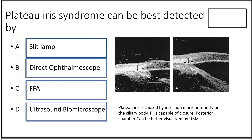Fifteenth question: plateau iris syndrome can best be detected using — slit lamp, direct ophthalmoscope, FFA, or UBM? Plateau iris syndrome is caused by rotation of the ciliary body, which is located in the posterior chamber. Other techniques don't provide adequate information about the posterior chamber, whereas UBM is the only technique that gives better information about the posterior segment.